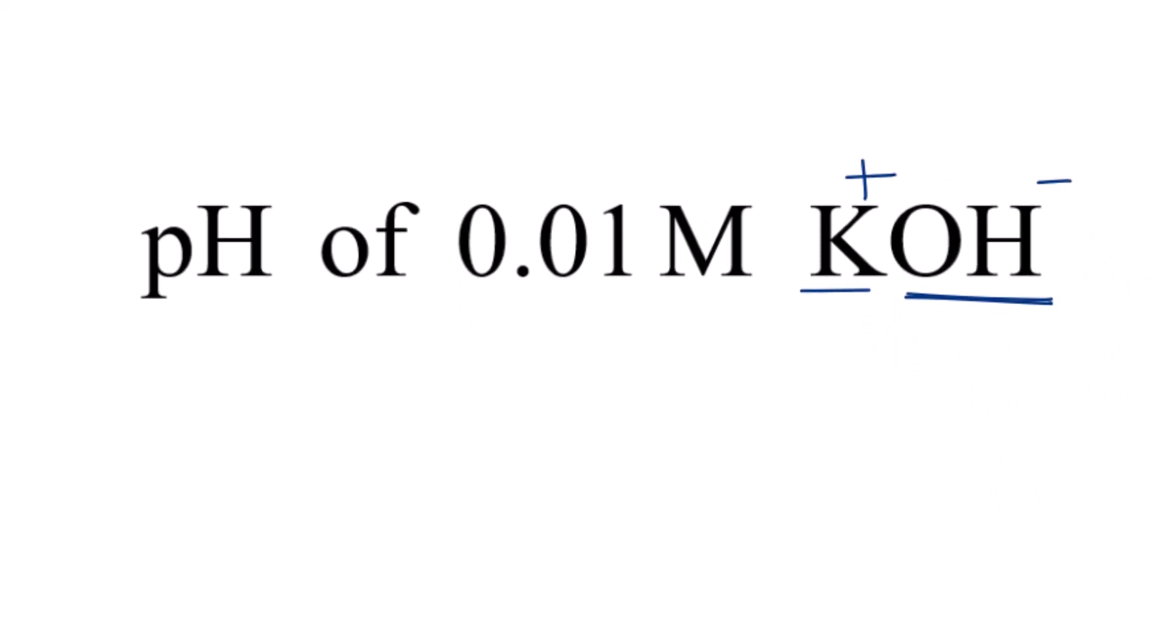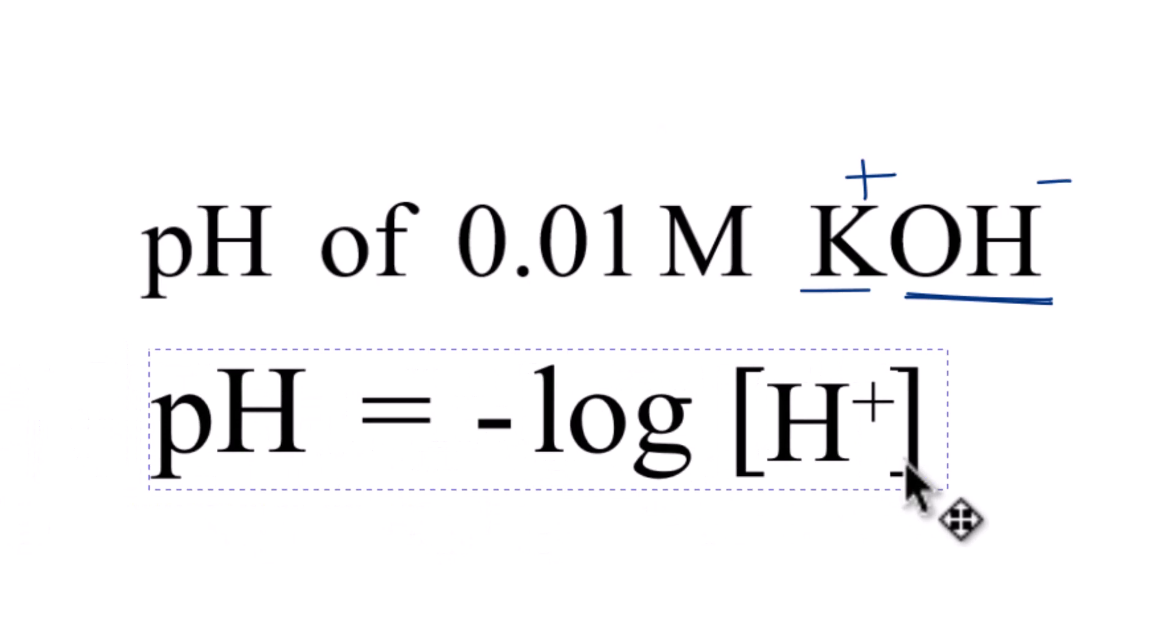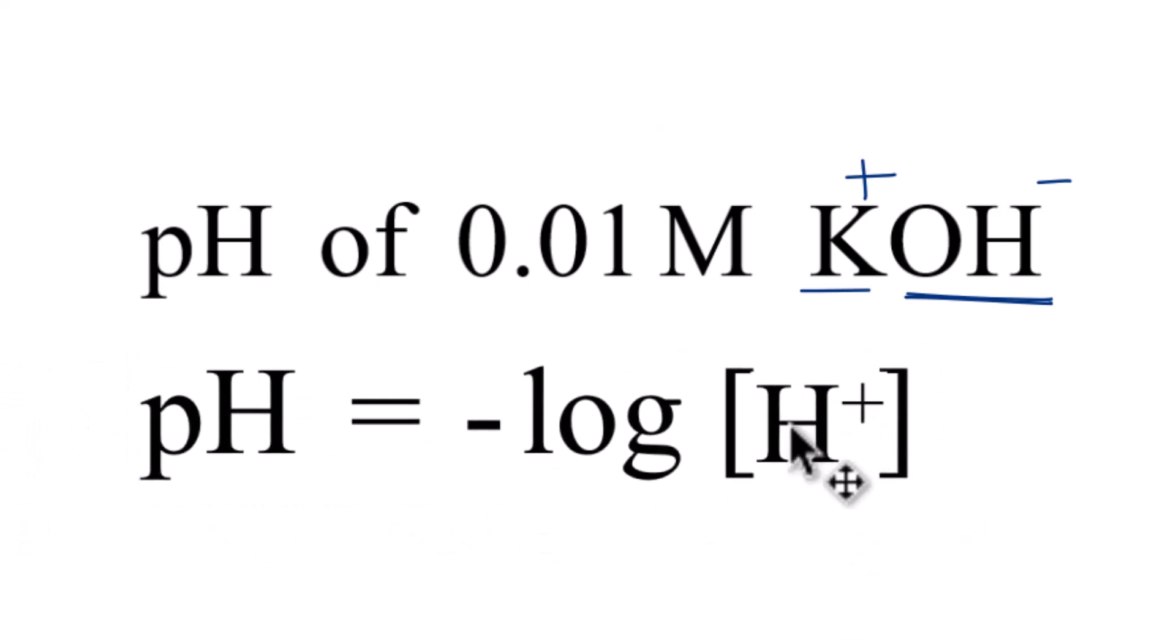Next, you might want to use this equation here, where you have pH equals the negative log of the H-plus concentration, the hydrogen ion. But there aren't any hydrogen ions here. There's a potassium ion, and then there's a hydroxide ion, that's because it's a base.